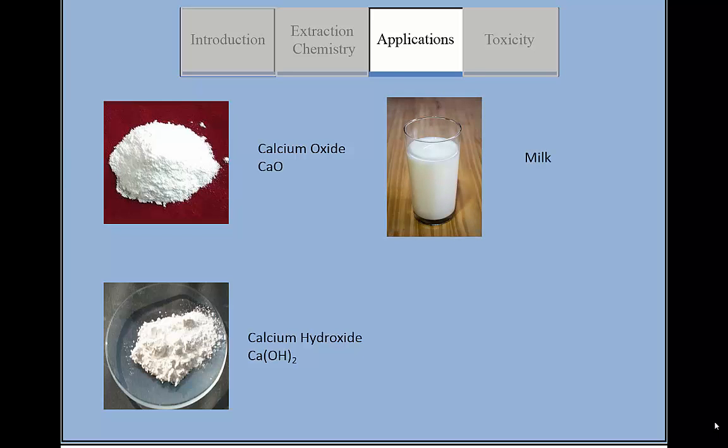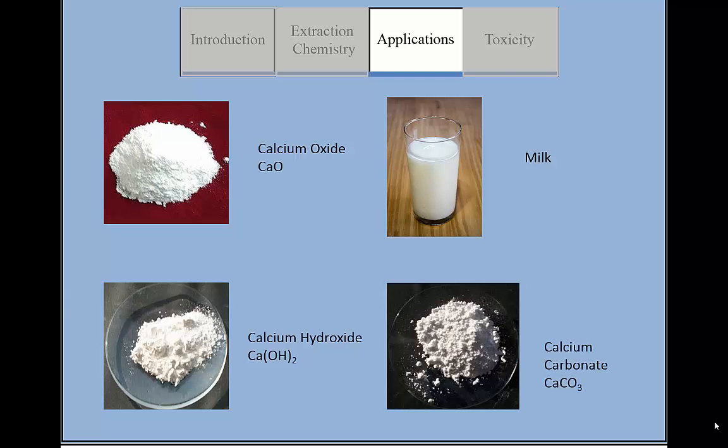For biological uses, bones are approximately 70% calcium by weight. Calcium compounds, like purified calcium carbonate, are often used to fortify foods in order to increase calcium intake. There are also other uses that won't be covered here, since we don't have enough time.